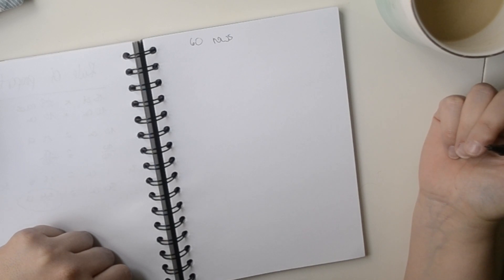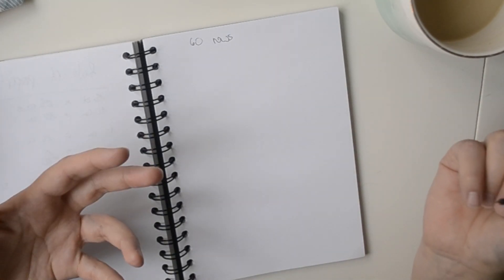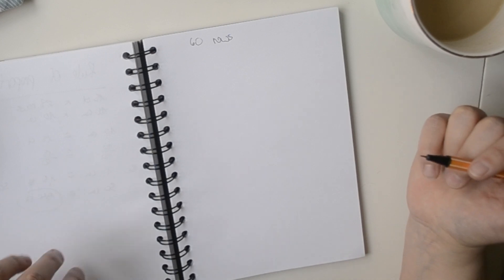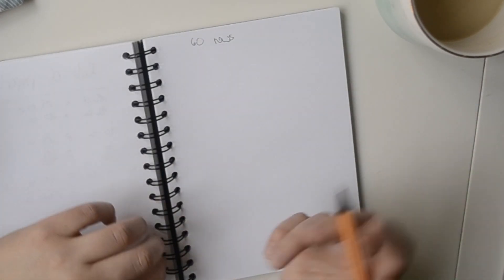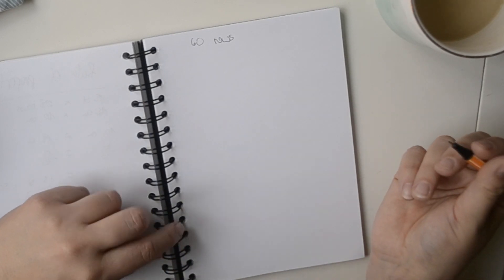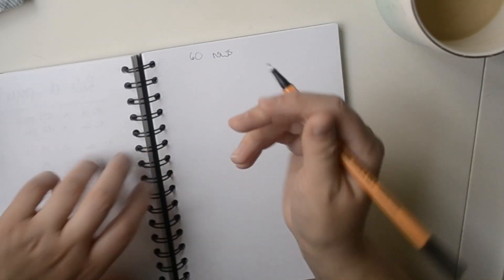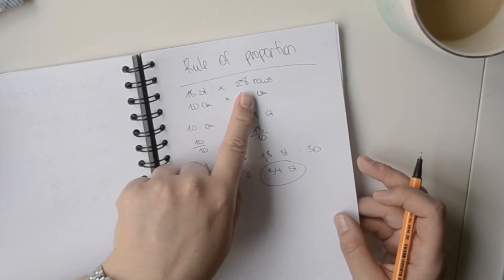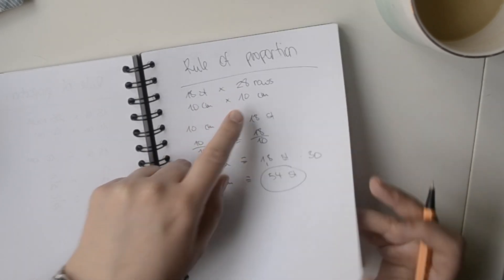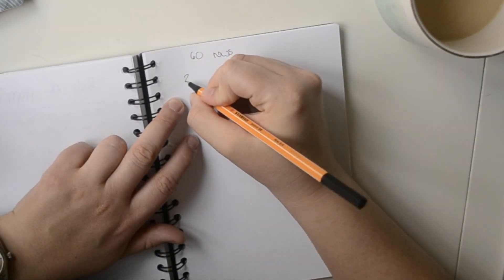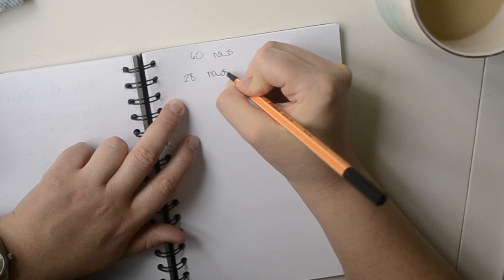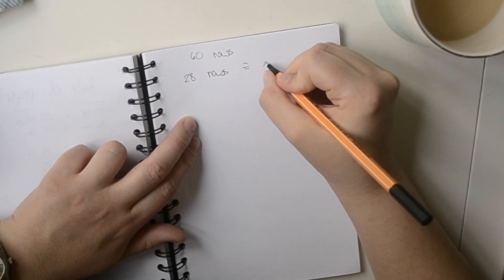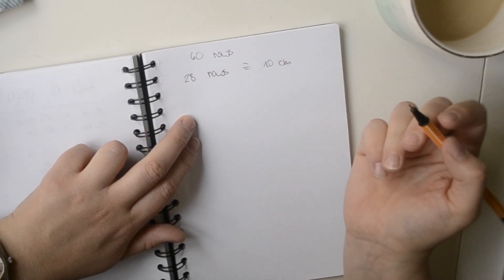And you are not having the same gauge as in your pattern, and you want to know, okay, with your gauge when you knit 60 rows, how many cm are that going to be. So we start with what we know. We have 28 rows on 10 cm. 28 rows is equal to 10 cm.